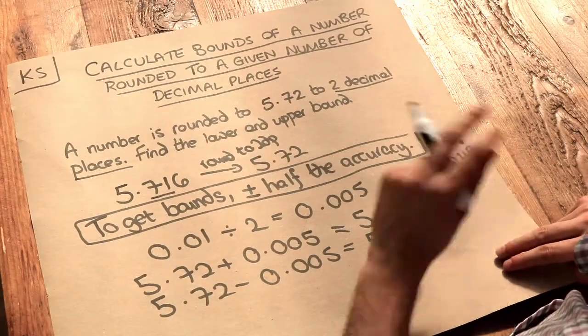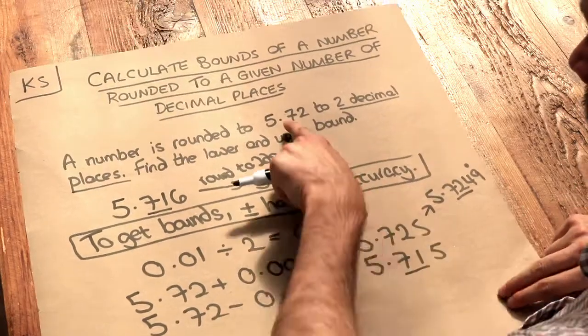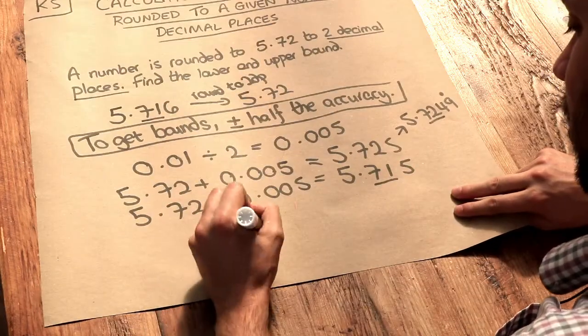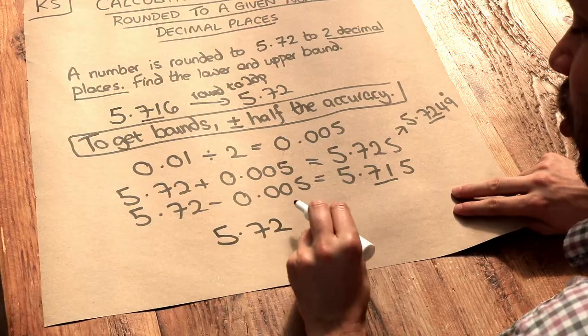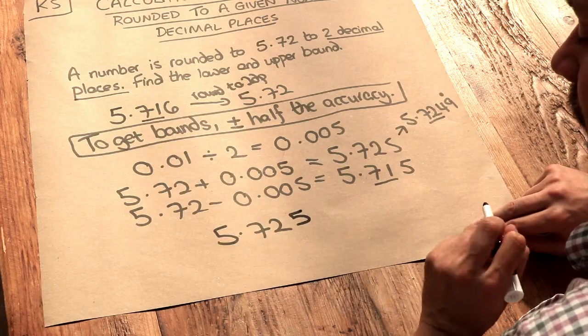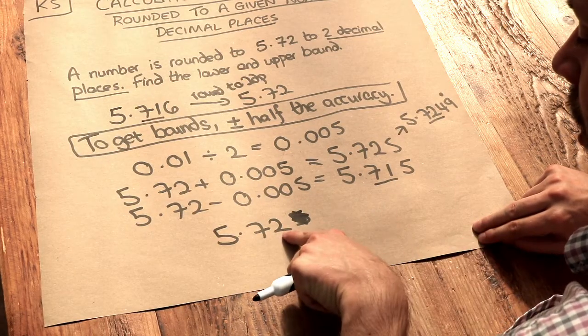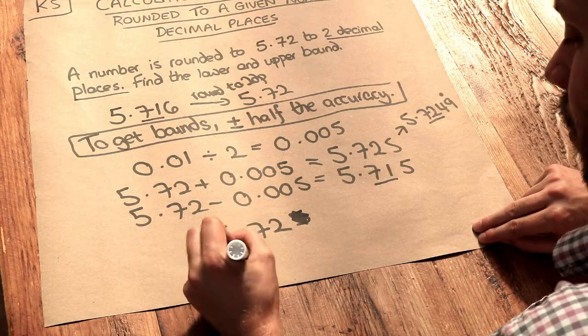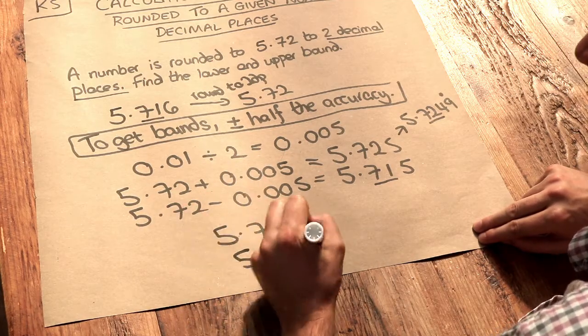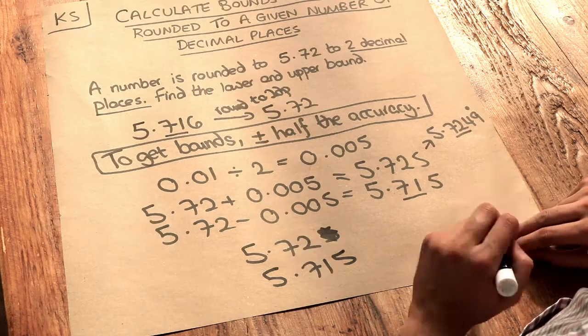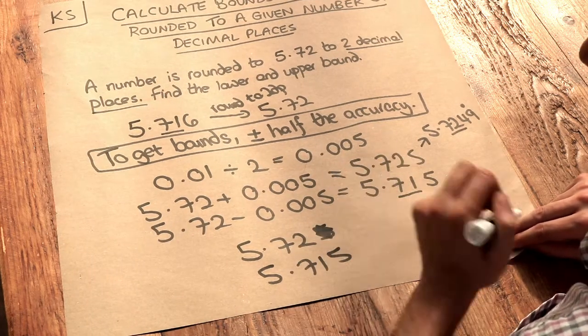And the kind of trick that works 90% of the time is that whatever your number is, if you've got 5.72, if you just shove a five on the end that gives you the upper bound and if you drop the last digit by one so you get 5.71 and shove a five on the end that gives you the lower bound. And that's a quick way that works most of the time.